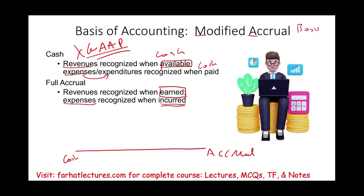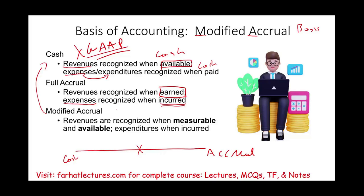Cash basis and full accrual are the two extreme bases of accounting. In between is something called modified accrual. Modified accrual has features of both — that's why it's called modified. You could also call it modified cash. Under modified accrual, revenues are recognized when they are measurable and available, and expenditures are recognized when incurred. Notice that expenditures being recognized when incurred is similar to full accrual, while the measurable and available concept for revenues is somewhat similar to cash.